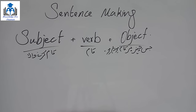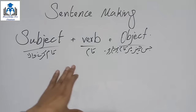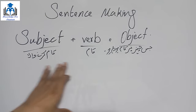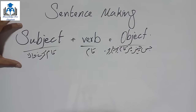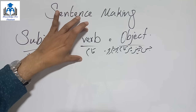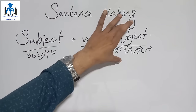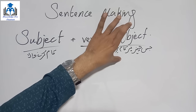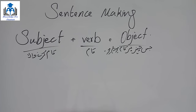Whenever you want to translate an Urdu sentence into English, follow this order: first, identify who is doing the action in the Urdu sentence and write its English; second, what action are they doing — write the English for that; and third, what thing is the action being done upon — write its English. By following this arrangement, you can make thousands of sentences on your own if you know the English of those words. Let's look at some examples.